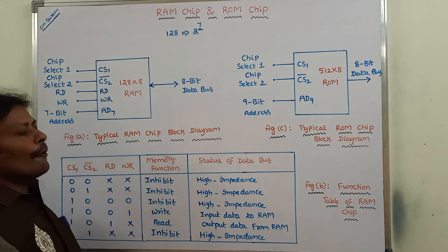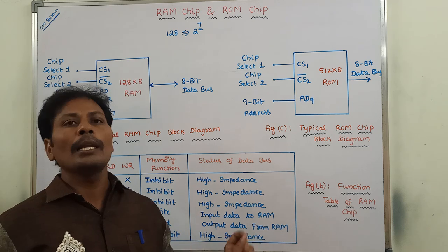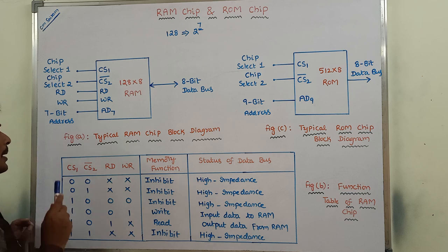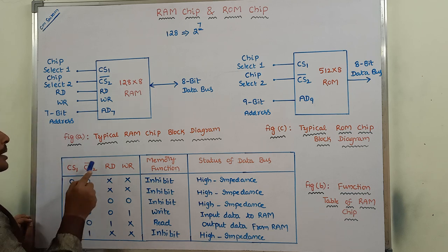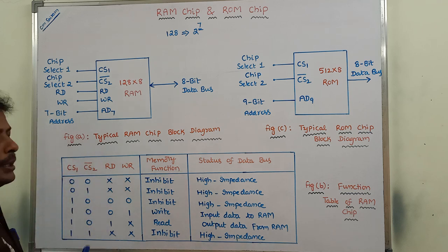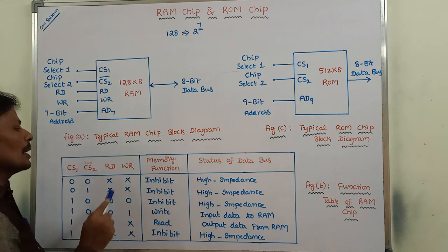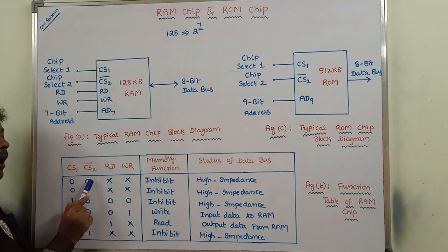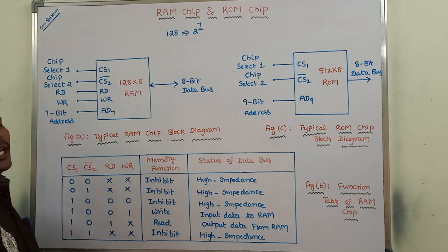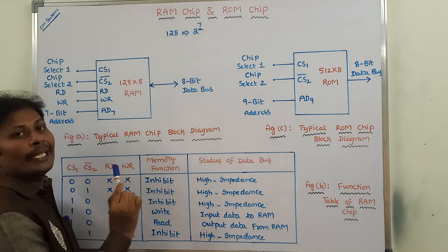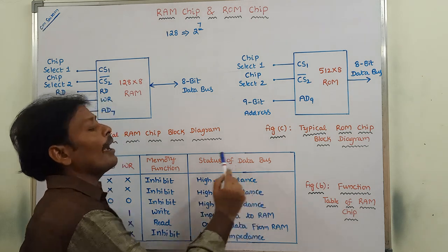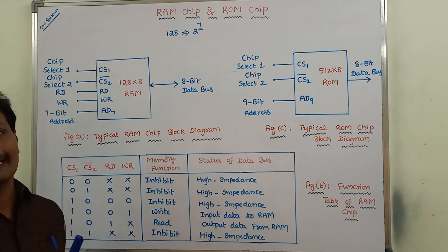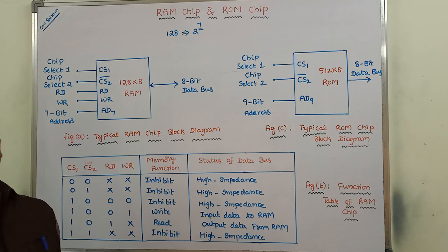Figure B shows the function table of a RAM chip. This function table specifies the operation of the RAM chip. The first column contains 4 inputs: CS1, CS2 bar, RD (read input), and WR (write input). When the chip select control inputs are not enabled, without involving the read and write inputs, the memory is in an inhibited state. At that time, the data bus is in a high impedance state, which behaves like an open circuit — there is no connection between the input and the output.